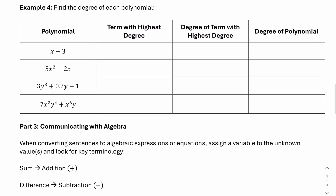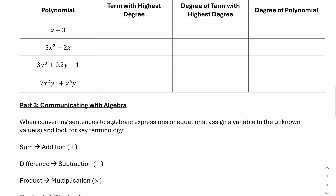In example 4, we find the degree of each polynomial. The first polynomial has two terms: x to the 1, which is degree 1, and 3, a constant which is degree 0. The highest-degree term is x, so the polynomial is degree 1. The second polynomial, 5x squared minus 2x, has two terms: 5x squared is degree 2 and 2x is degree 1. The highest-degree term is 5x squared, so the polynomial is degree 2.